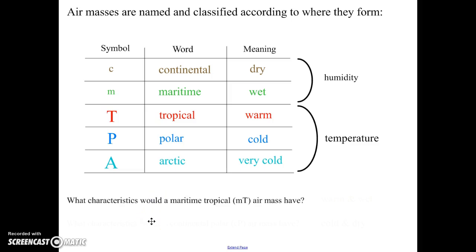So let's say there was an air mass that was called maritime tropical. Okay, lowercase m for maritime, capital T for tropical. What characteristics would it have? Well, the maritime means wet, tropical means warm. So this air mass is going to be warm and wet.